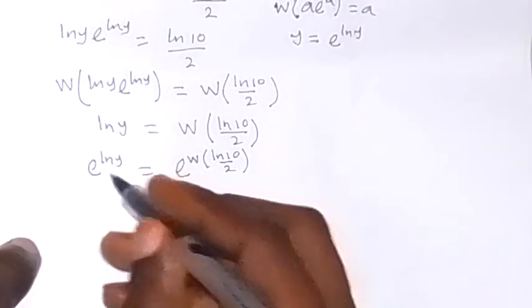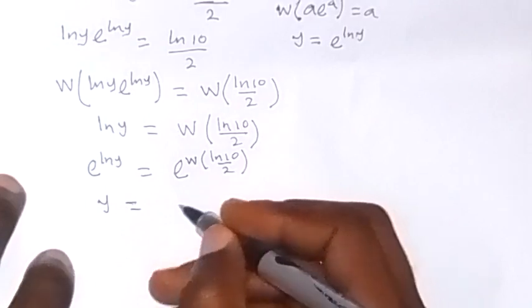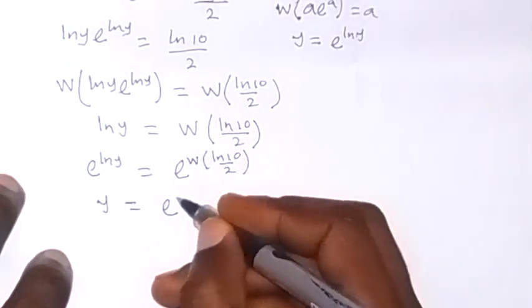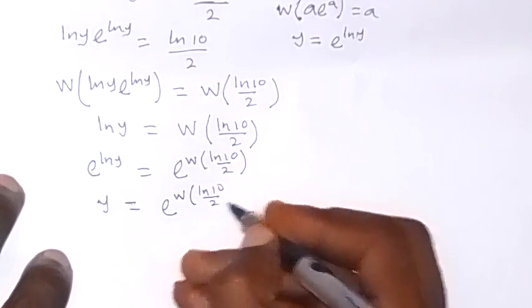Then from here, this is just y. So we have y now equals to exponent W function, then ln 10 over 2.